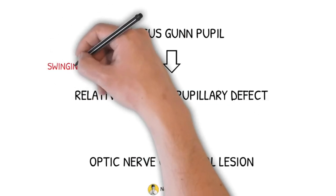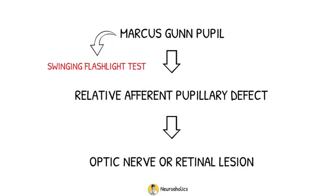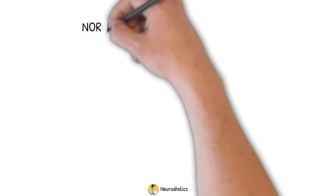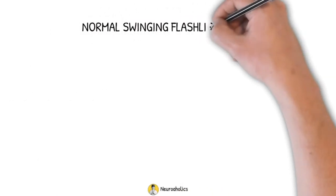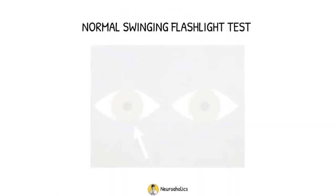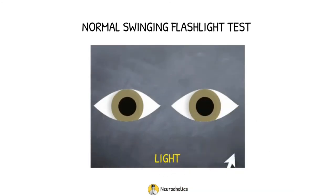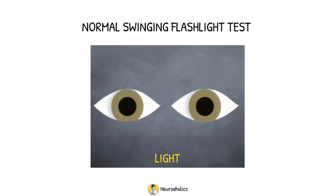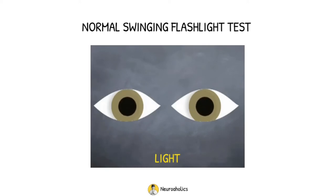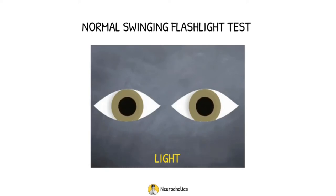It is best tested by the swinging flashlight test. To perform this test, a bright flashlight is shown onto one pupil and constriction is noted. Then the flashlight is quickly moved to the contralateral pupil and the response is noted. This swinging to and fro of the flashlight is repeated several times while the pupillary response is observed.